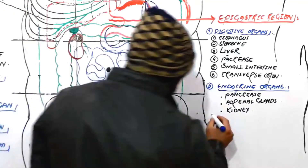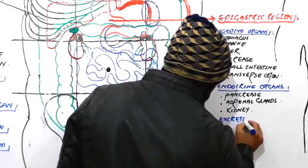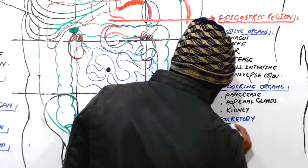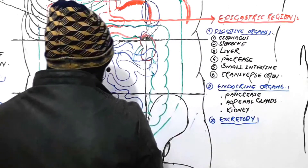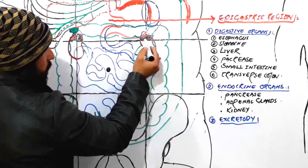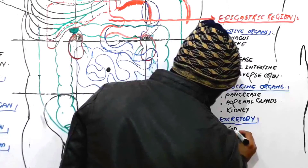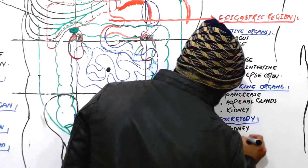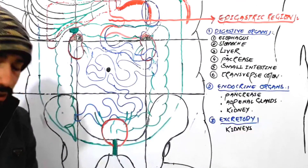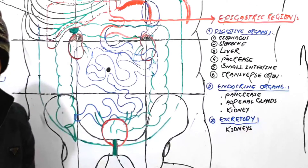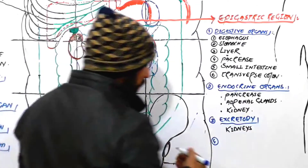Are there any excretory organs in the epigastric region? Yes — the kidneys. Some parts of the kidneys are found in the epigastric region. Not all parts of the kidney, but some parts are found there, and they play their role in the excretion of different substances while performing osmoregulation.